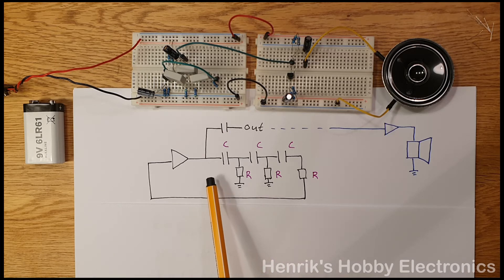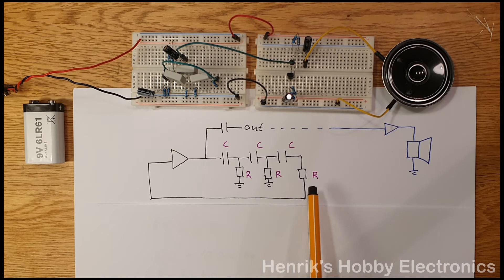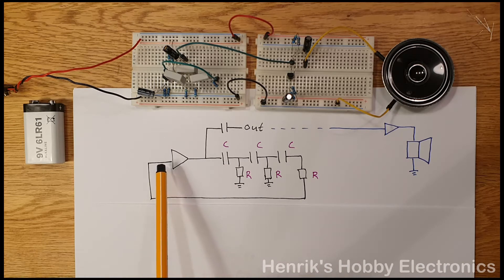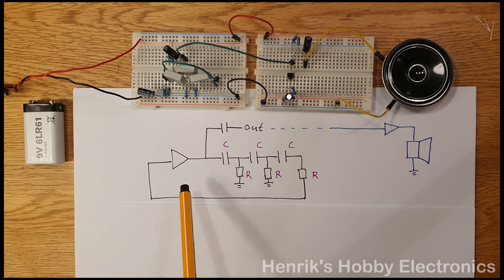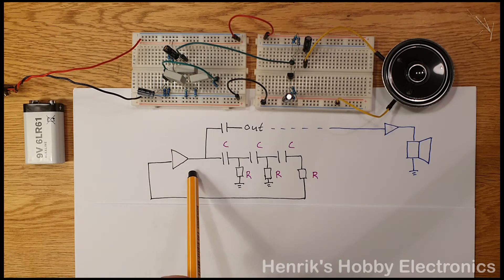This means that the total phase shift coming out of these three RC sections would be 180 degrees. And then you take this signal and you input it into the input of the amplifier again. If you use an inverting amplifier then the total phase shift will be 180 degrees plus 180 degrees from the amplifier, so a total phase shift of 360 degrees.